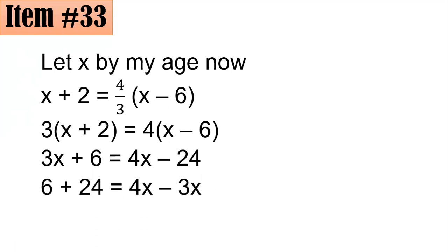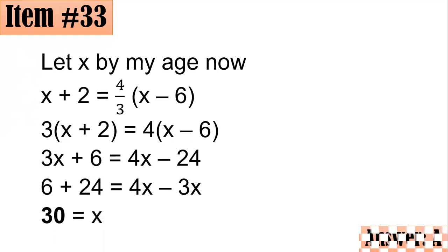Subtracting 3x from both sides and adding 24 to both sides, I have 6 plus 24 equals 4x minus 3x, which simplifies to 30 equals x. Hence I am 30 years old now — letter a is the correct answer.